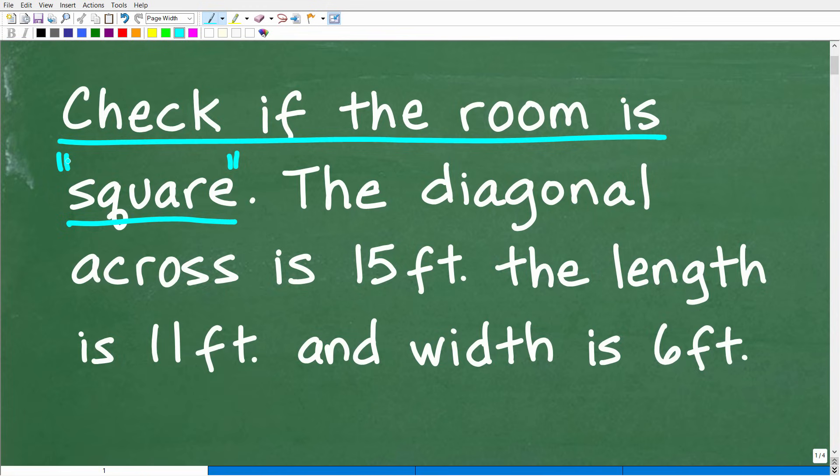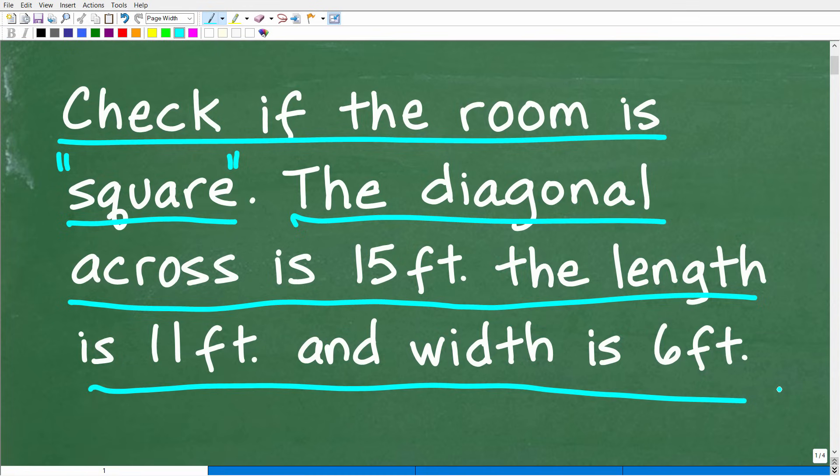We're being told that the diagonal across this room is 15 feet, the length is 11 feet, and the width is 6 feet. All right, so that is the question.